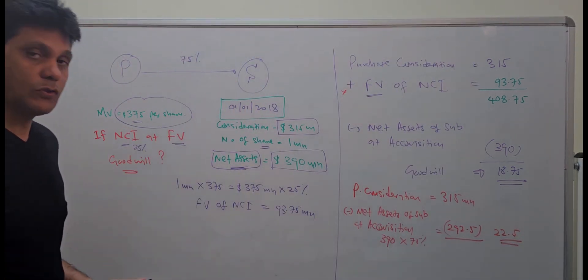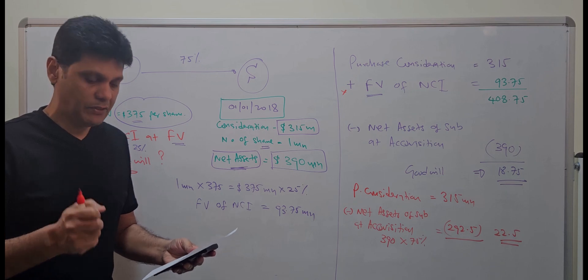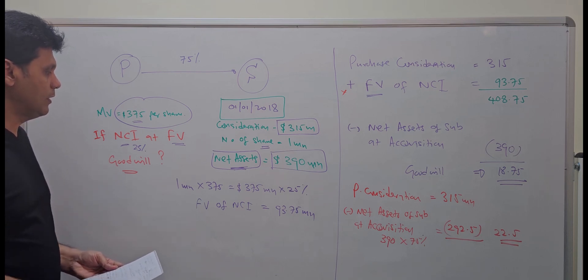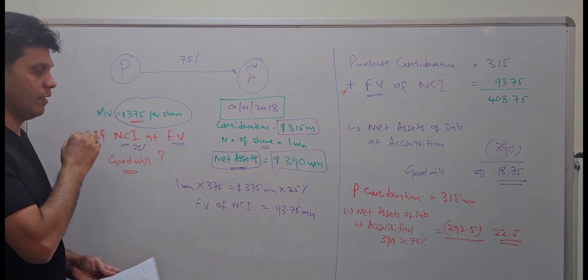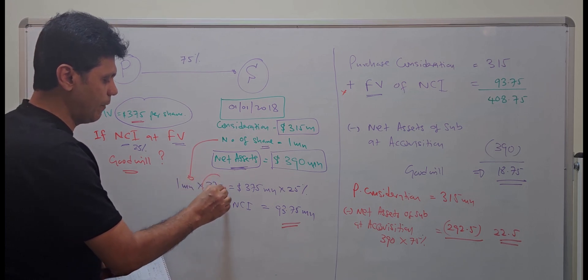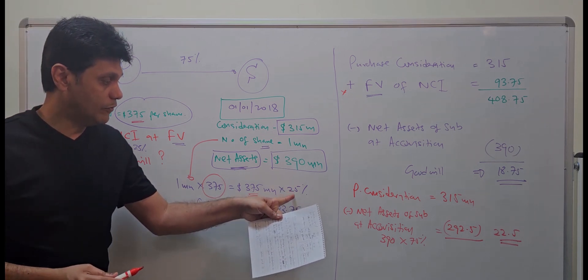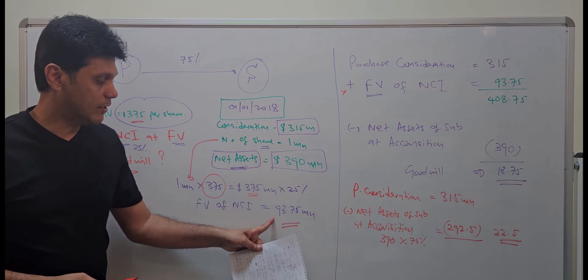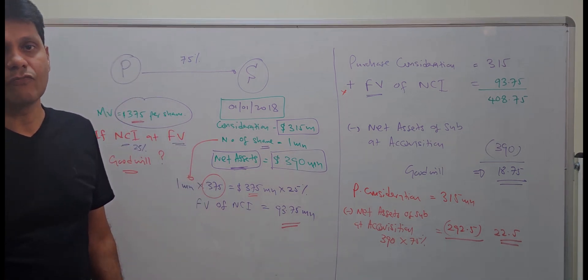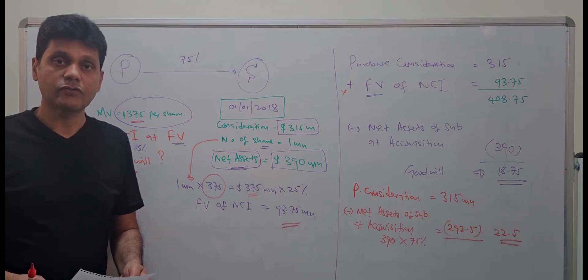In this question, we were required to calculate goodwill when NCI is measured at fair value. To do so, we used the market value per share — 1 million shares at $375 per share gives $375 million total; 25% of that is $93.75 million NCI fair value — resulting in goodwill of 18.75 million. With that, I will conclude the session. Thanks for watching and bye for now.